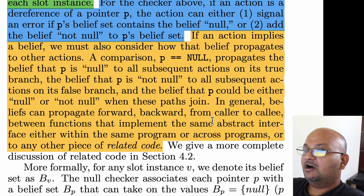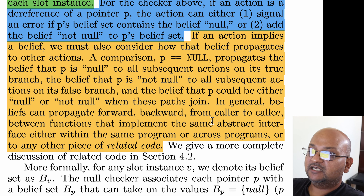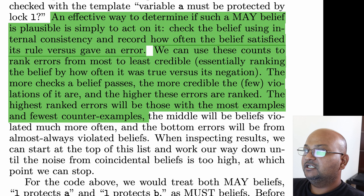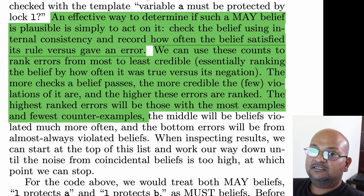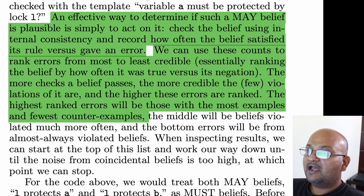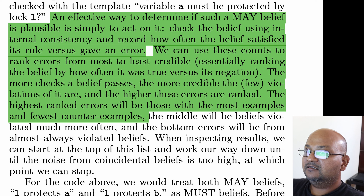In general, the job of the checker is to look at these templates, find concrete slot instances to fill in them, and then propagate the implied beliefs through all code paths. For may beliefs — which includes things like A must be followed by B — they do a statistical analysis to see how often that pattern is followed versus not followed. Those counts are then used to rank which errors are likely to be real bugs. As they note, the higher the count of a belief being held, the more likely it is that the few violations of it are real bugs.